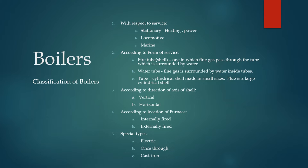Now we can see the classification of boilers. Boilers are classified with respect to service — that is, stationary, locomotive, or marine. In stationary boilers, steam is used for heating or in a power plant. According to the form of service, we have fire tube boilers, also called shell tube boilers, in which flue gas passes through the tube and is surrounded by water.